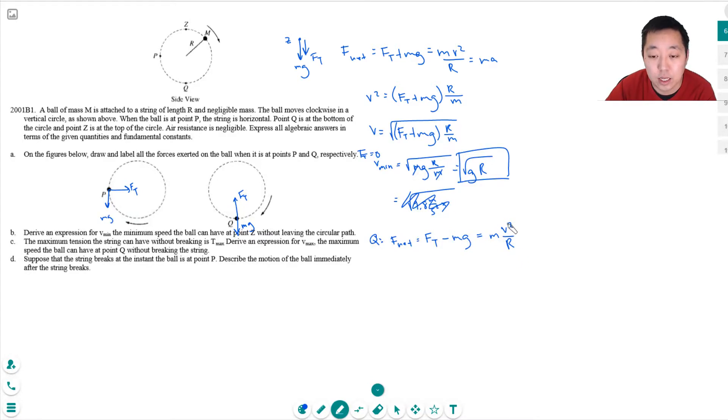You do net force equals MA, instead of being a linear acceleration, A is equal to V squared over R. So again, solving for V squared, I get FT minus MG times R over M. And so V is equal to root FT minus MG R over M.